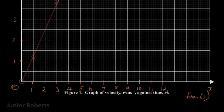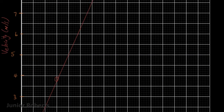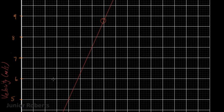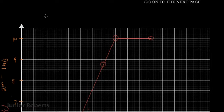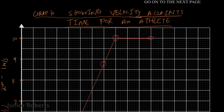Now that the points are plotted, we finish up by adding the labels for our axes and putting in the scale. On the x-axis we use a scale of one centimeter equals one second, and on the y-axis we use a scale of two centimeters equals one meter per second. The final thing is to put in a suitable title for our graph.